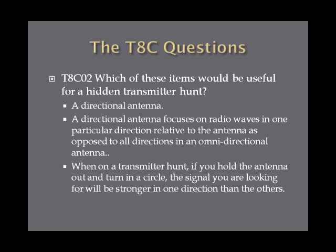Which of these items would be useful for a hidden transmitter hunt? A directional antenna would be useful on a transmitter hunt. A directional antenna does exactly what it says — it focuses on radio waves in one particular direction. The advantage is that it allows you to pinpoint where that hidden transmitter is. If you wave a directional antenna back and forth, the position where the signal strength is strongest is usually the direction of that transmitter. That's how it's used on a transmitter hunt.